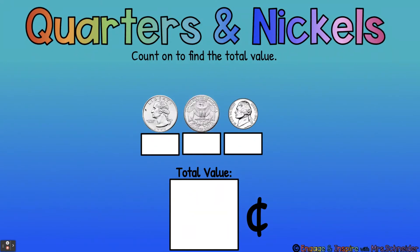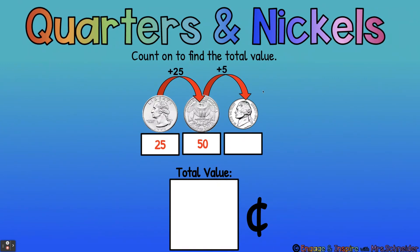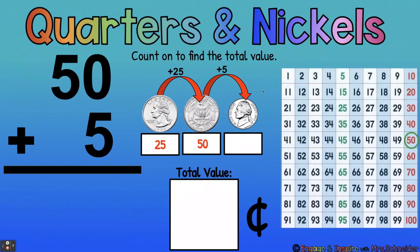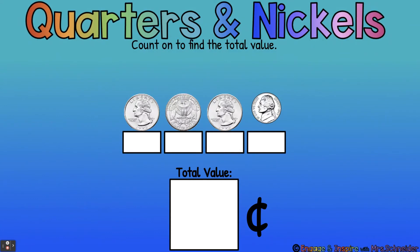Here we have two quarters. One quarter is 25, two quarters is 50. Now we're going to switch and count by 5. So 50 plus 5 — what is 50 plus 5? 55. So the total value is 55 cents.